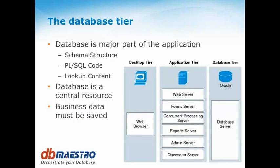Let's talk about the database tier. In software development, we started with two tiers — client and database — then moved to three tiers: desktop, application server, and database. Then we added web servers, storage, and more. The topology of tiers has increased and is very complex. But the database tier remains very important and very difficult to know what happens there. All the version control solutions that gave good solutions for desktop, IIS, application servers, web servers, and report servers didn't handle the database well.